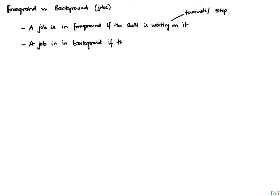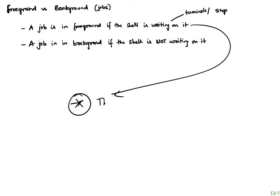A job is said to be in the background if the shell is not waiting on it — that seems like a pretty straightforward answer, but we have to hash out some details. When a background process is running and the shell is not waiting for it, what is really happening behind the scenes? When the shell is waiting on a foreground process, one of the important things that will happen is the foreground process is in control of the terminal.